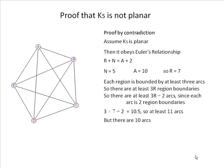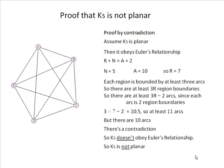But there are 10 arcs. That's a contradiction. So K5 does not obey Euler's relationship, and so K5 is not planar. That completes the proof that K5 is not planar. That little QED tells us that we have completed the proof.